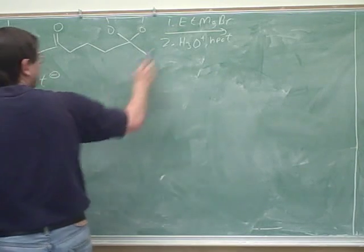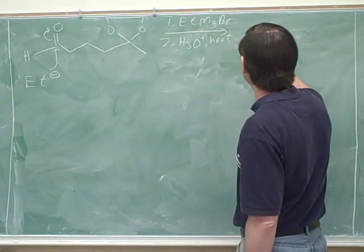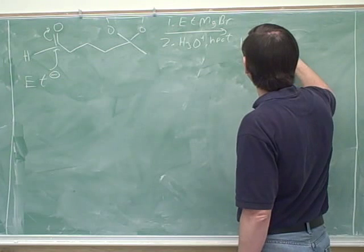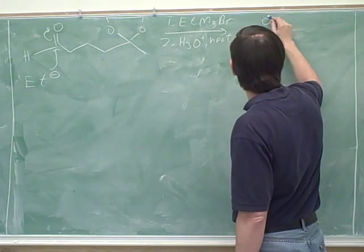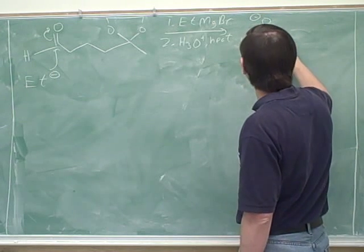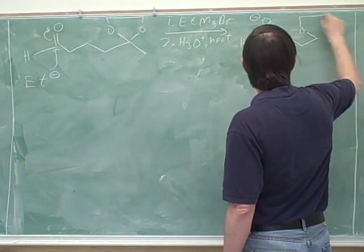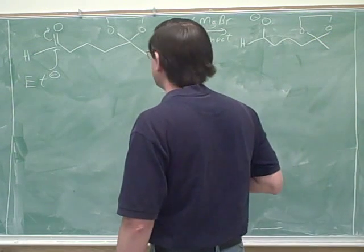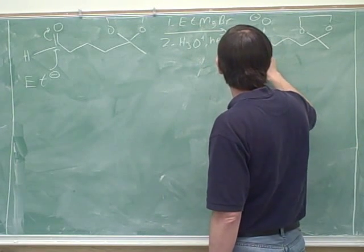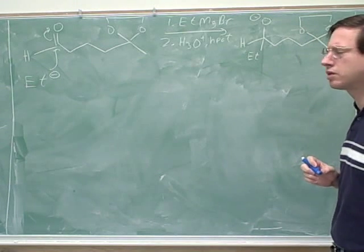So we know that we should treat a Grignard just like Et minus. So this would come in here. So then we get... And here would be that ethyl group.